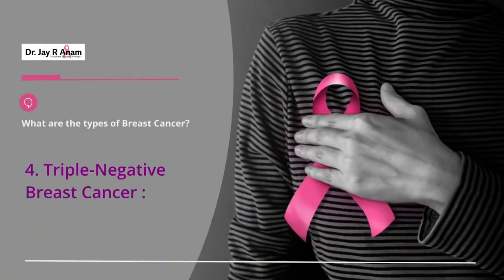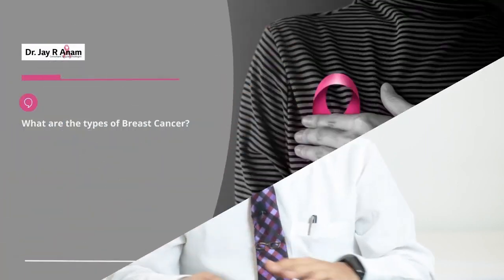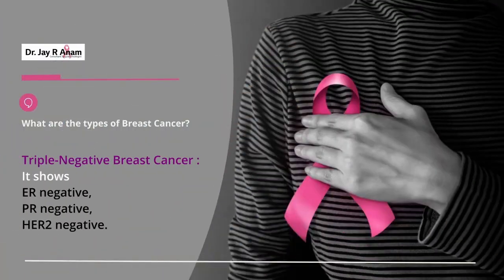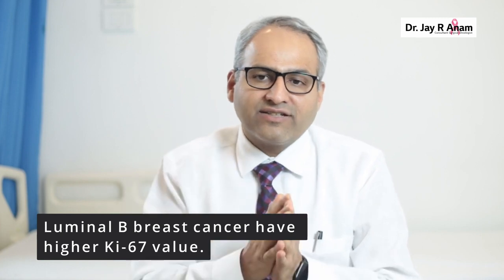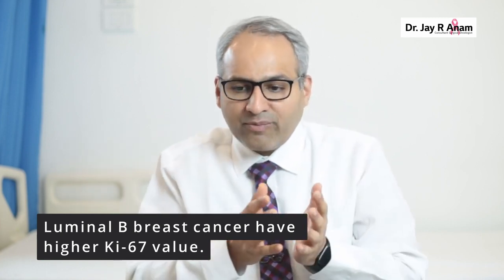The fourth type is triple negative breast cancer, also called basal cell-like. It is called triple negative because it lacks estrogen receptors, progesterone receptors, and HER2-neu receptors. This type usually has a high KI67 index, meaning these tumors proliferate or multiply very fast. Taking advantage of this rapid multiplication, we add chemotherapy drugs, which also damage these tumors very quickly.